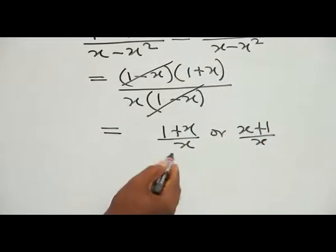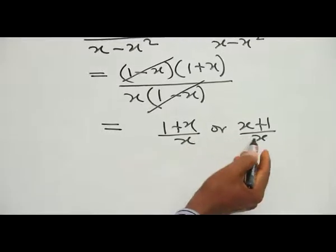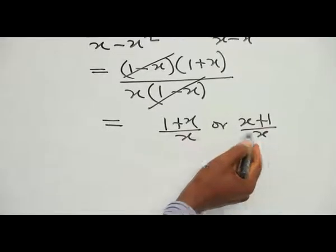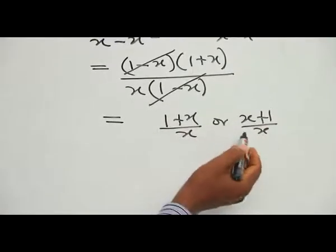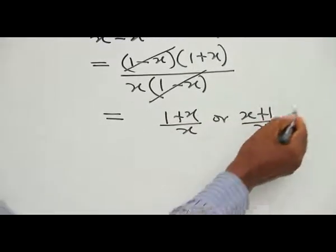This gives you the solution to that problem. You have simplified the given expression and the answer is (1 plus S) over S, which can also be written as (S plus 1) over S since addition is commutative.